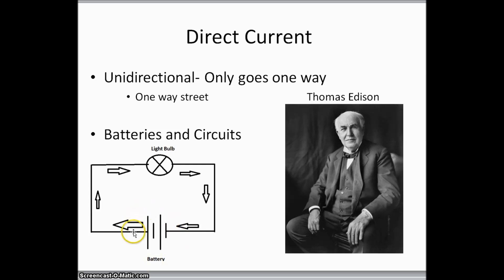So if we take a look down here at the bottom, we have our battery and our circuit. The battery emits electrons, they flow through, they keep going, and they go through this one way. They just keep cycling through this one path. That's all they do. One way, unidirectional.